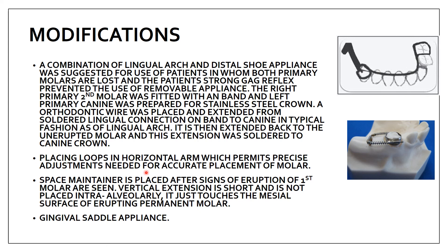Other modifications include: placing loops in the horizontal arm for precise attachment and accurate placement; using a shorter vertical extension not placed intra-alveolarly once signs of first molar eruption are seen, just touching the mesial surface of the erupting molar; and the gingival saddle appliance. The lingual arch combination is the most commonly used modification when both primary molars are prematurely lost.